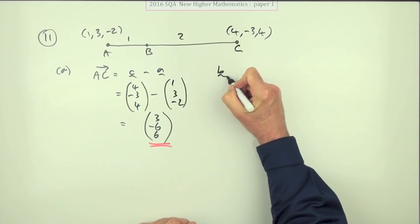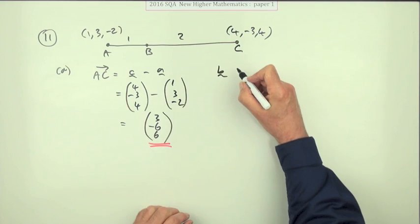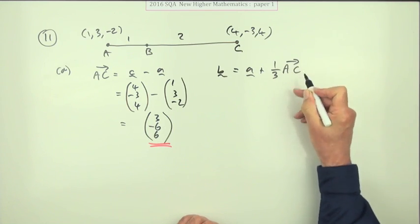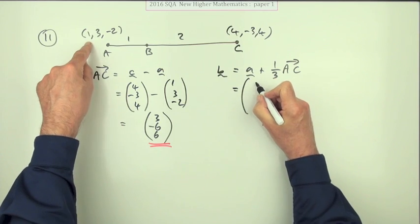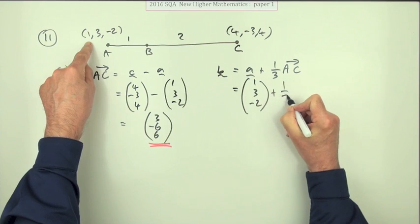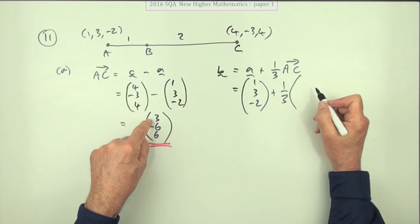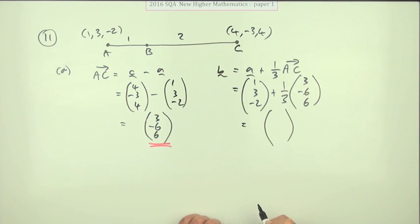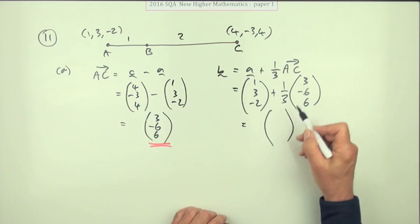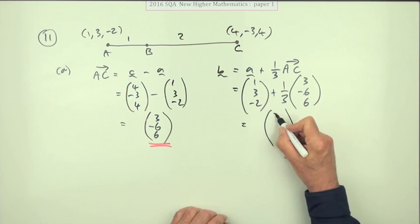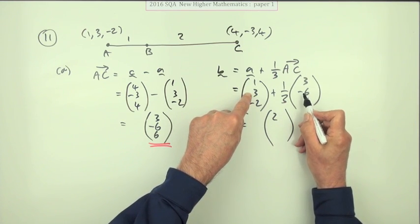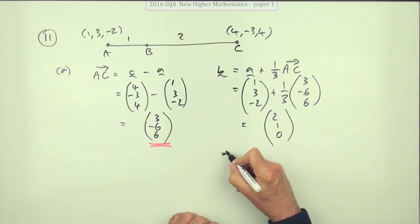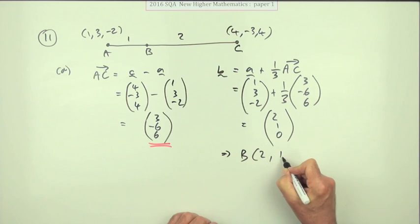How do you find B? If you start at A and go one-third of the way from A to C, you'll arrive at B. So start at A, which is (1, 3, -2), and go a third of AC. You can just do that arithmetic: 1 + (1/3)(3) = 2; 3 + (1/3)(-6) = 1; -2 + (1/3)(6) = 0. So B is the point (2, 1, 0).